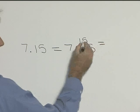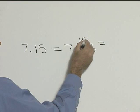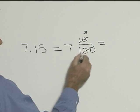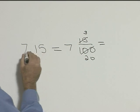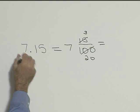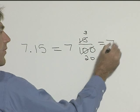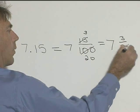Now let's reduce that. 5 goes into 15 three times, and 5 goes into 100 twenty times. So 7.15 is the same as 7 and 3/20.